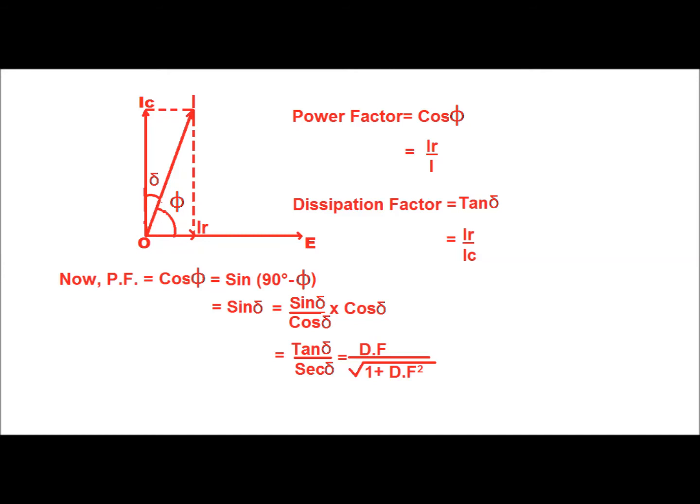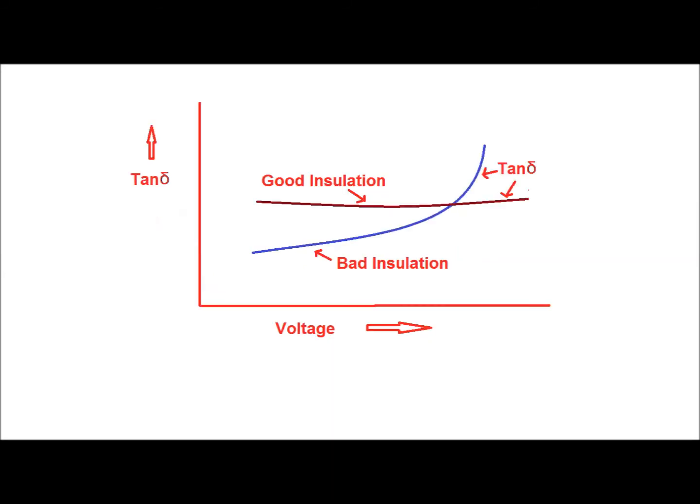That is the ratio of the resistive component of current to the resultant current. Dissipation factor tan delta equals the ratio of the resistive component of current to the capacitive component of current. The more the resistive component of current, the more the tan delta value. If you solve the equation, the power factor equals the dissipation factor divided by the square root of one plus dissipation factor squared. This is the relation between power factor and dissipation factor.